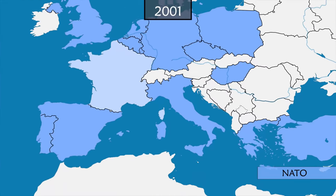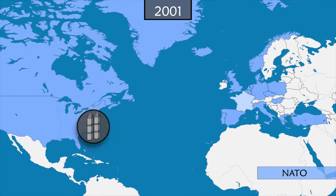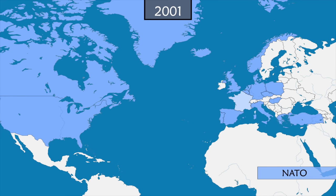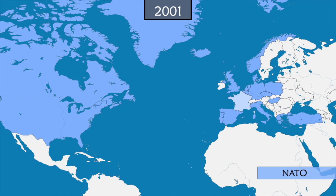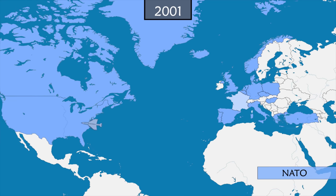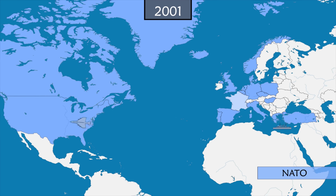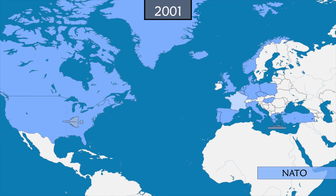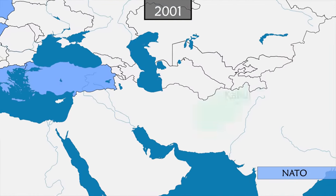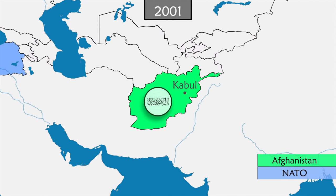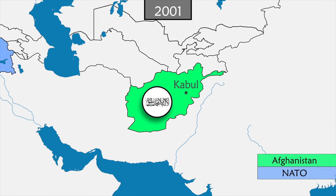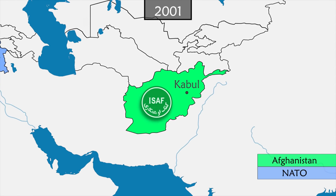On September 11, 2001, the United States is the victim of terrorist attacks on its territory. For the first time ever, NATO activates Article 5 and commits itself to the fight against terrorism. Military aircraft are sent to the United States to patrol the skies and the naval force is deployed to the Mediterranean Sea. The United States forms a military coalition and goes to war against Afghanistan, which is ruled by the Taliban and where Osama bin Laden is located.